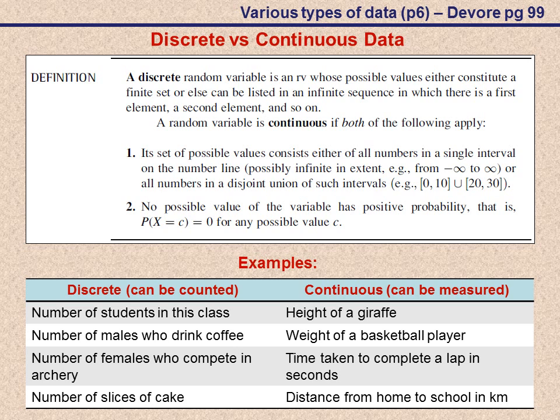Examples of continuous variables would be something like height, weight, time, or distance. These are all things that can be measured. We don't count them. That is the easy way of remembering it. Discrete can be counted where continuous can be measured.